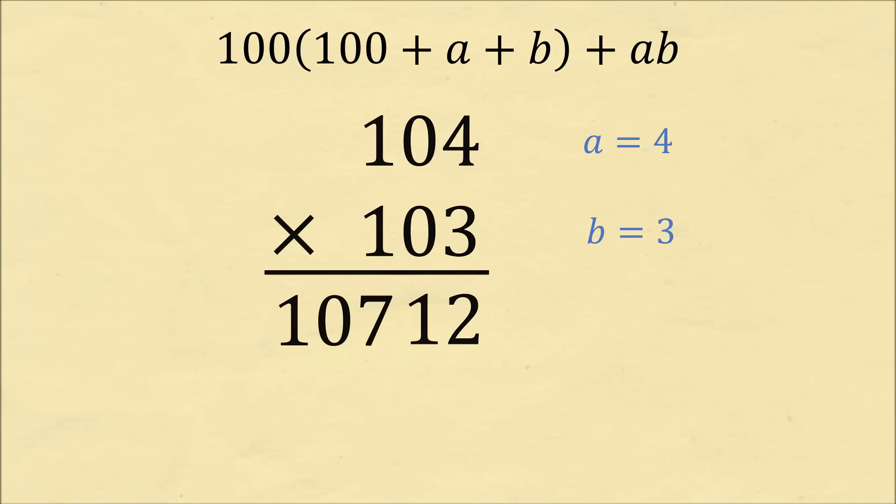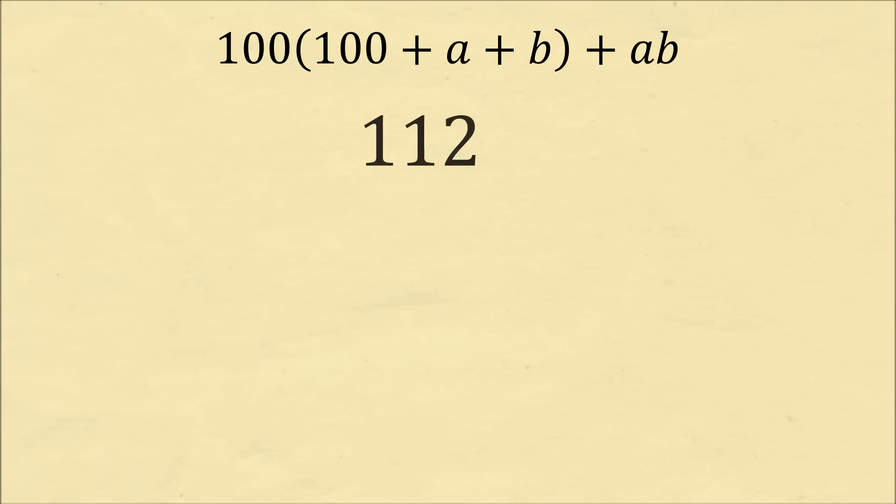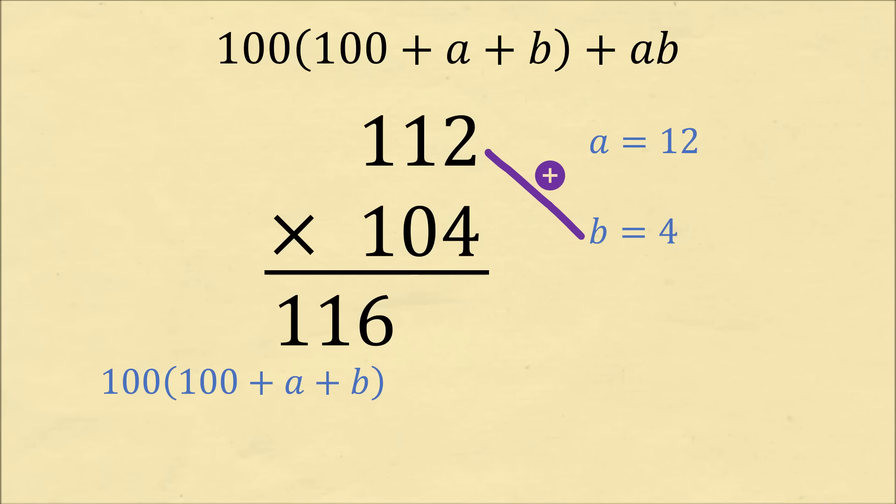Let's do another example. Let's calculate 112 times 104. 112 is 12 more than 100, and 104 is 4 more than 100. We now cross-add. 112 plus 4 will be equal to 116. We then take the product of 4 and 12, which is equal to 48, and we just append that on the answer. So we have that 112 times 104 is equal to 11,648. What an amazing new trick we discovered!